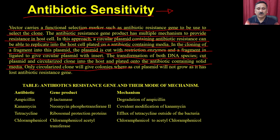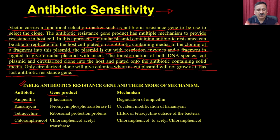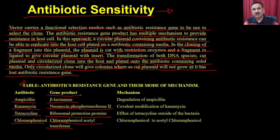Only the circularized clone will give colonies, whereas the cut plasmid will not grow as it has lost the antibiotic resistance genes. As shown in this table, the antibiotics include ampicillin, kanamycin, tetracycline, and chloramphenicol. The gene products from the antibiotic resistance genes are beta-lactamase, neomycin phosphoryltransferase, ribosomal protection proteins, and chloramphenicol acetyltransferase — these are responsible for the inactivation of these antibiotics.